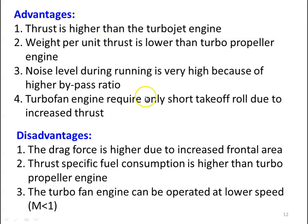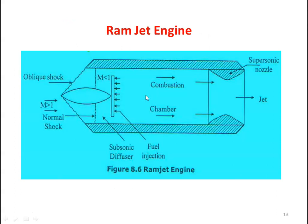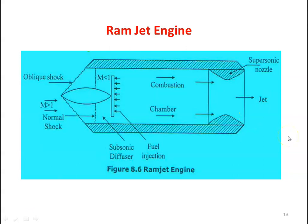Now we discuss another group of jet engines where there is no compressor and no turbine — all mechanical moving devices are completely removed. We have only a passage for compression, combustion, and expansion. The first kind is the ramjet engine. Looking at the cross section: at the entrance we have a supersonic diffuser, then a subsonic diffuser, then fuel injection, then combustion, and then a supersonic nozzle. There is no compressor and no turbine.